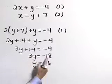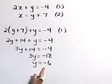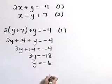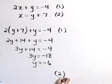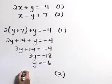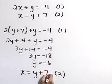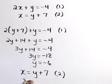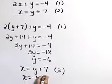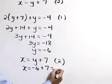We're almost there. We've got one variable solved for, y is negative 6. I think I'll go back and use equation 2 to solve for x. And equation 2 is x is equal to y plus 7. Therefore, x is equal to negative 6 plus 7, or 1.